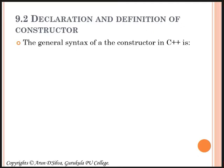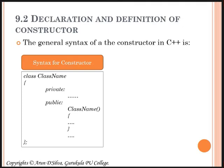Let me keep in front of you the general syntax of a constructor in C++. You write the class keyword and then the class name. The private section will be there. In the public section, you create the constructor — it doesn't have any return type, and it has the same name as the class. Arguments are optional. The constructor body is there, and then the class is closed.